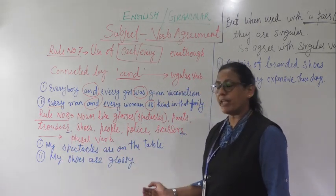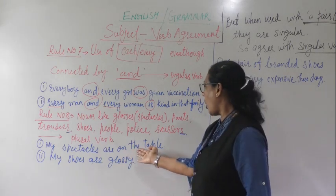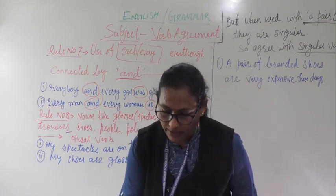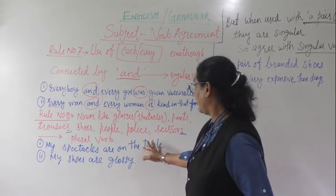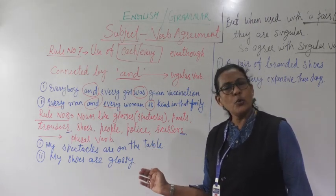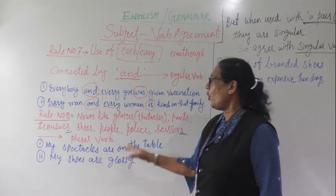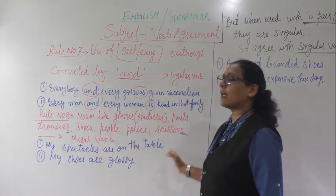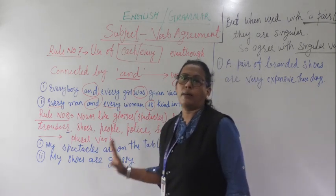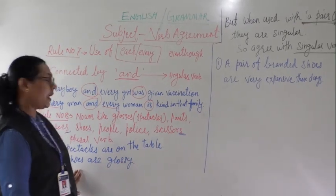Let's look at examples. 'My spectacles are on the table.' 'My shoes are on the table.' 'My shoes are red in color.' So spectacles, shoes — these nouns like glasses, spectacles, pants, trousers, scissors always take a plural verb.